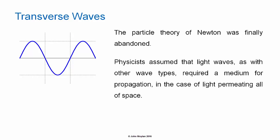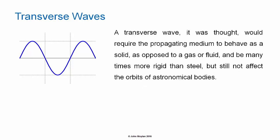Physicists assumed that light waves, as with other wave types, required a medium for propagation, in the case of light permeating all of space. A transverse wave, it was thought, would require a propagating medium to behave as a solid, as opposed to a gas or a fluid, and be many times more rigid than steel, but still not affect the orbits of astronomical bodies.